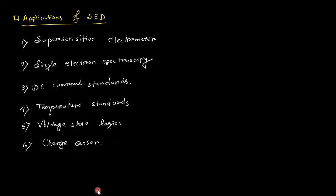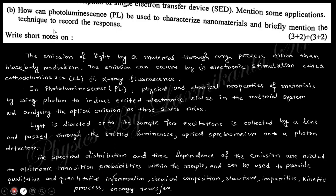Next question: how can photoluminescence be used to characterize nanomaterials, and mention the technique to record the response. Photoluminescence means when photons or light fall on the material, electrons jump from valence band to conduction band. In other words, electrons jump to higher energy levels, then release from the higher energy state to lower energy state and radiate some energy. This is known as photoluminescence, which gives information about the material, so it characterizes the material using the photoluminescence phenomenon.